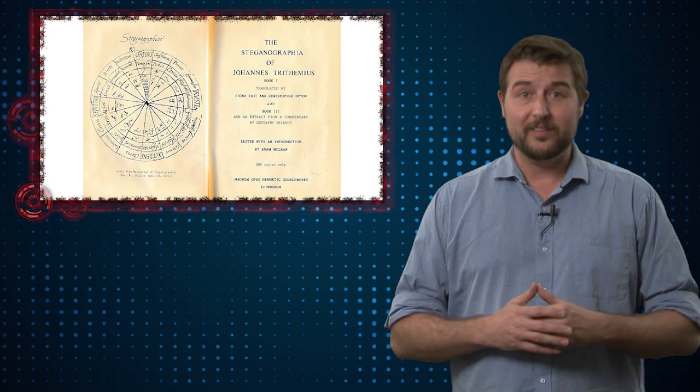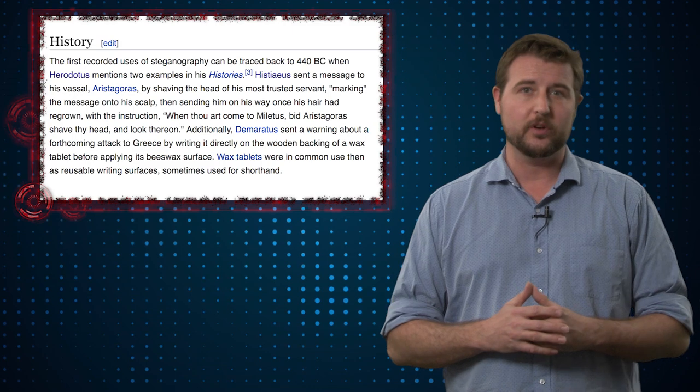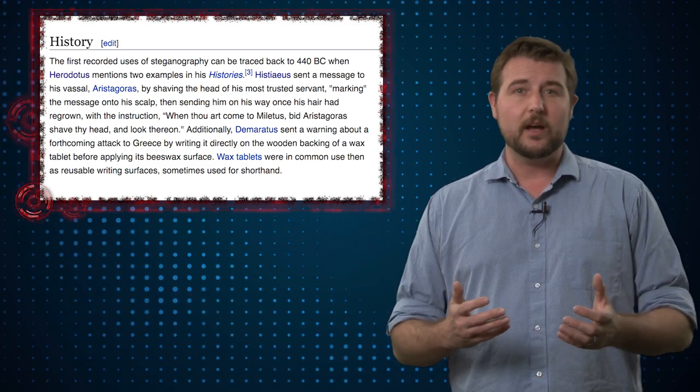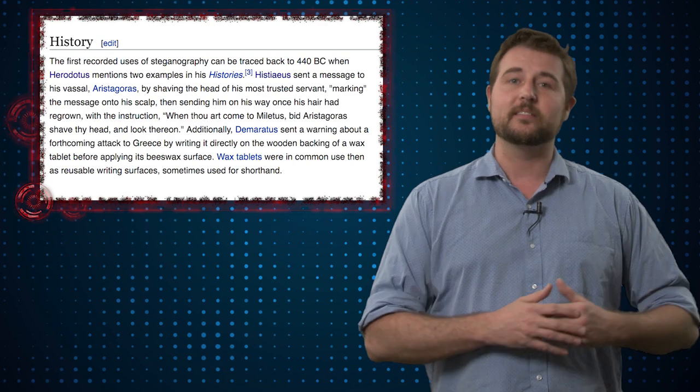Steganography was actually used well before this. The first recorded usage of this sort of secret message technique was when Greek kings would shave a vassal's head, tattoo a message on that vassal's head, wait for the hair to grow back, and then have that vassal travel across land to deliver the message. If intercepted by spies, they would have no clue he had a message under his hair. But once he got to the recipient, he could shave his head again and they could read the message. Thus was born steganography — the art of hiding secret messages in something else.